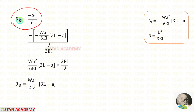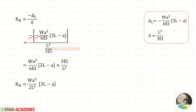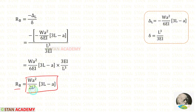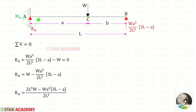Let us apply the values of δL and δ into the formula. Negative into negative becomes positive. Taking the term inversely and multiplying, we can eliminate EI — 2 threes are 6. Finally, for RB we have the expression: RB = WA²(3L − A) / (2L³).